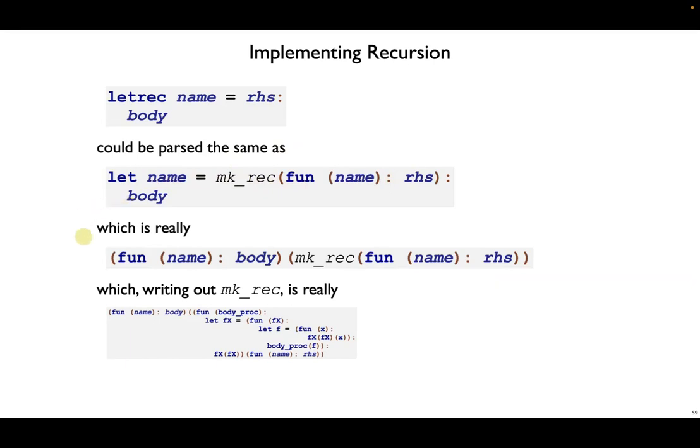Which is really the same thing, unfolding the let, as calling a function with name as the parameter and the body. And the argument of that function is our makeRec call. And if we write out makeRec, this whole thing is really just one big lambda term.